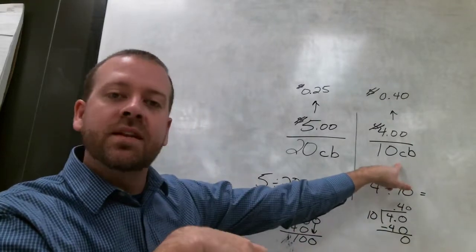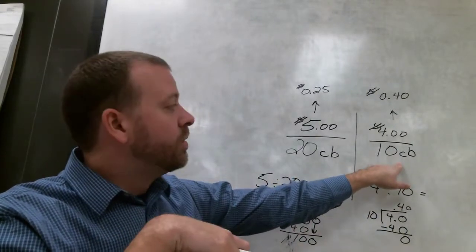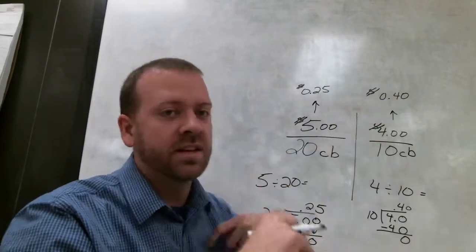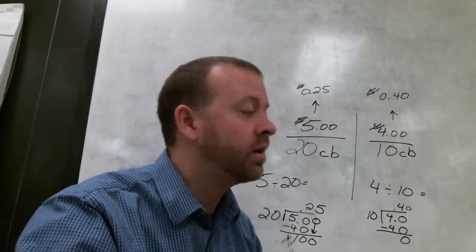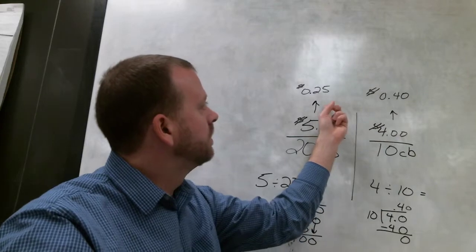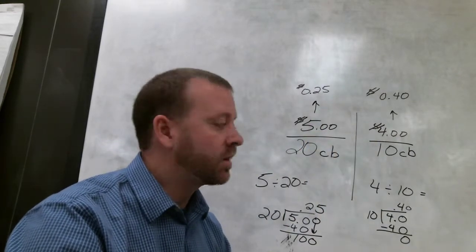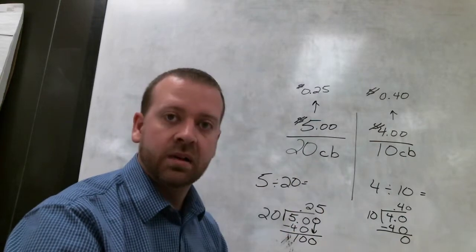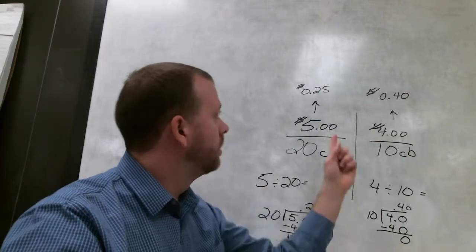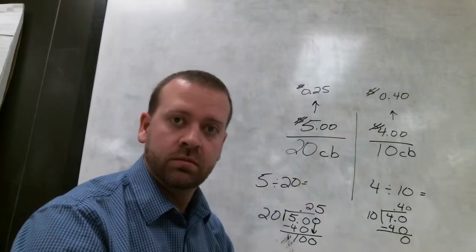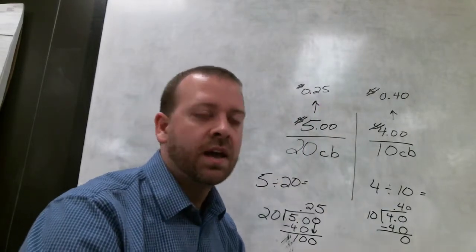And that tells us the unit rate. That means that for this box that I'm buying for $4 with only 10 candy bars in it, that means for each candy bar I'm paying 40 cents a piece. Where this bigger box, I'm only paying 25 cents per candy bar for this box. Which one's the better deal? Well, of course, this one is, because per candy bar, this one's cheaper. That's unit rate, and that's how we use it.